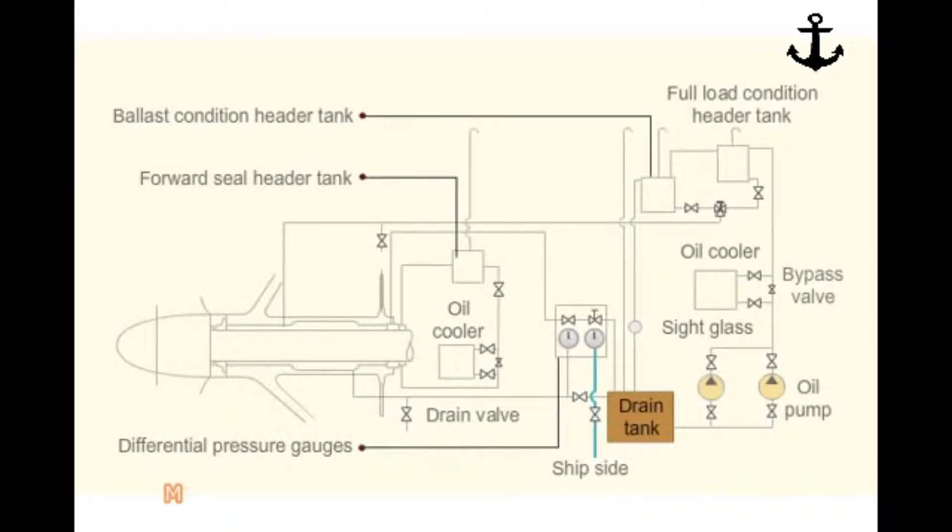Lubrication system. The lubrication system consists of a drain tank which acts as a reservoir for storage of oil. Drain tank is a double bottom tank located in the aft of the engine room.